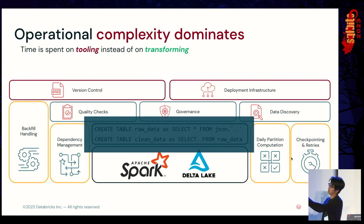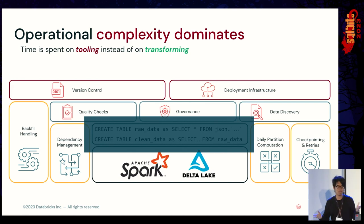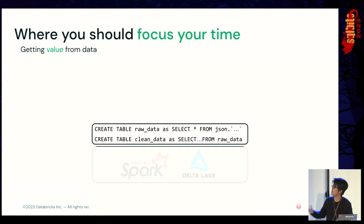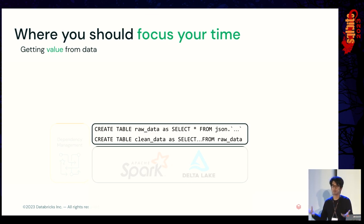The operational complexity happens all outside of your logic. How do we make that a little bit easier? Because in reality, you should focus on how you model your data — that's probably the most important thing when everyone talks about data models.